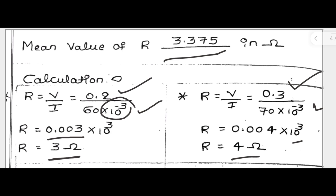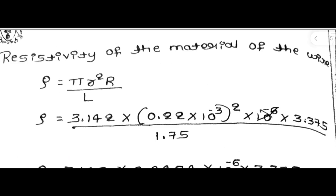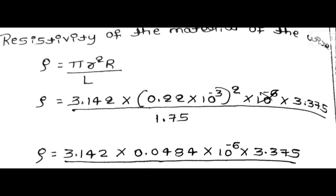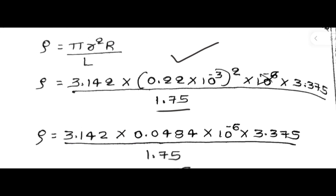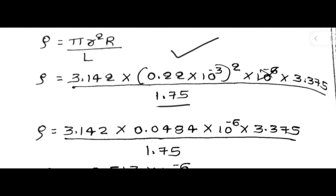Using that mean value in the resistivity formula: rho = π r² R / L. Here π = 3.142, small r = 0.22 × 10⁻³ m (given value), capital R = 3.375 ohm (mean value), divided by L = 1.75 m (length of the experimental wire). In the next step, write 3.142 as it is, and calculate 0.22 squared.